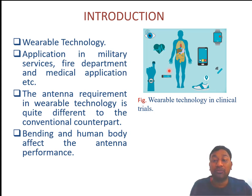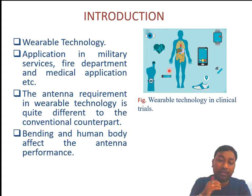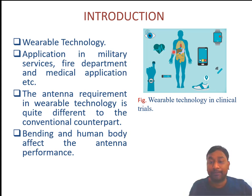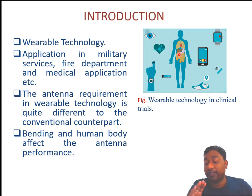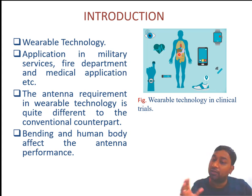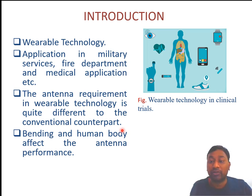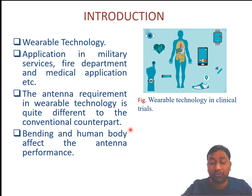The human body is a lossy material, so whenever we use antennas in different positions like hand, wrist, or chest, bending also affects performance because different human bodies as well as different human body bending and curving structure patterns are different. So many things come into consideration, making wearable technology quite challenging. First we must choose the substrate — specifically a wearable substrate.